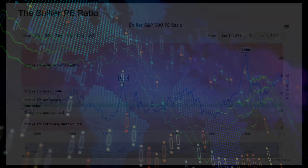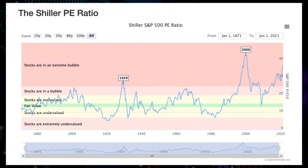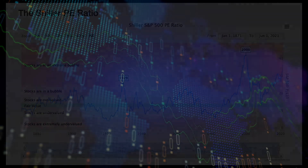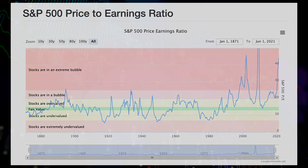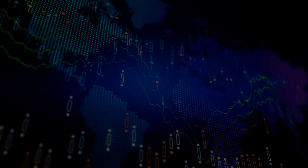Now, if we look at the Shiller P/E ratio, those two spikes disappear because the denominator is now the cyclically adjusted 10-year average of real earnings. This becomes clear if we go back and forth between the regular version and the Shiller version.